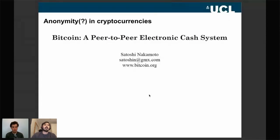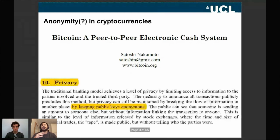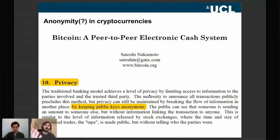Before diving into the details, I'd like to go through the timeline of anonymous cryptocurrencies in general. Bitcoin was introduced in 2008 — it was the first cryptocurrency created and is still by far the most dominant in terms of market value. In its white paper, Bitcoin claimed to be an anonymous currency, because instead of using real-life identities, users use public keys, making it supposedly impossible to know who transacts with whom.